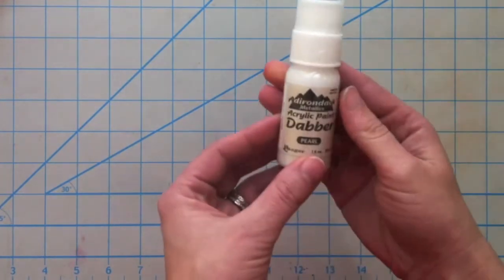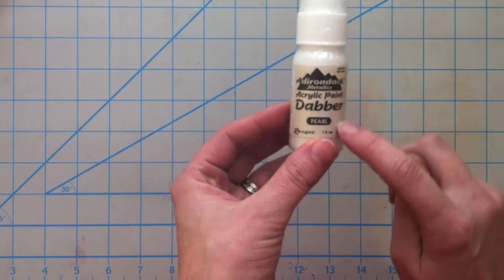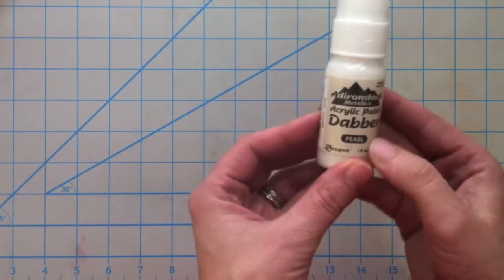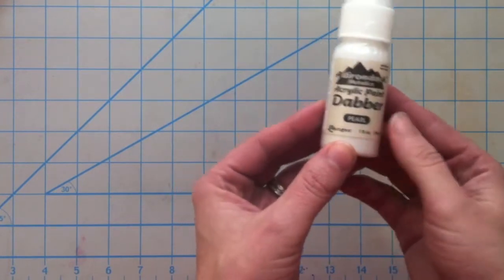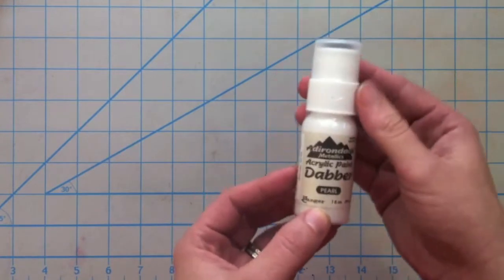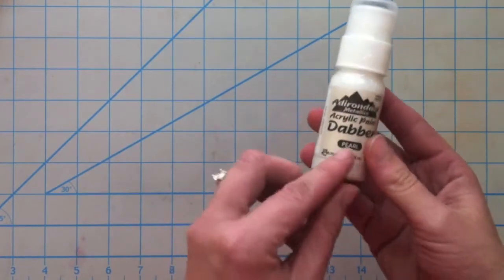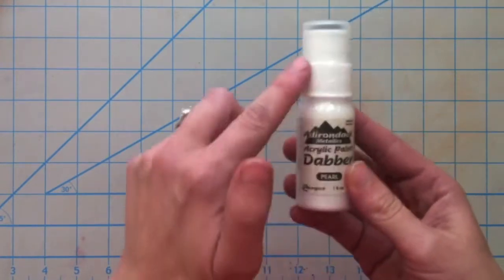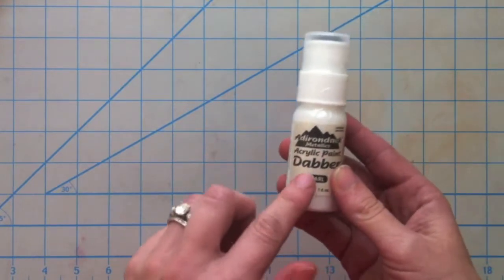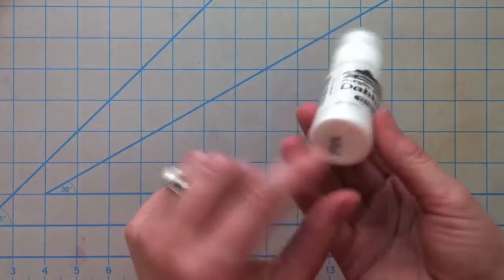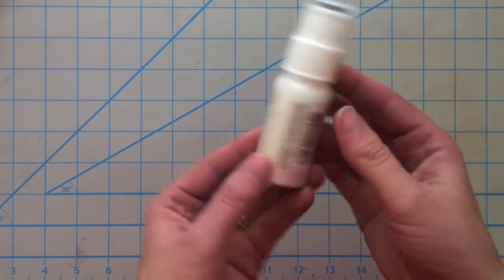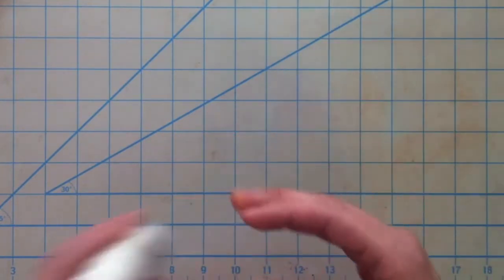I picked up this - I've never tried their Paint Dabber before. This is from Ranger and it's in the color Pearl. I saw this on Jennifer McGuire's blog and I really liked it. I'm going to use it just like I would use the Distress Stains or my Ginny Boland Paint Dabbers, but this one is Pearl so it's going to have that nice shimmery look.